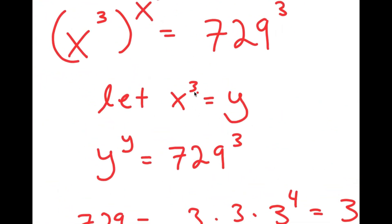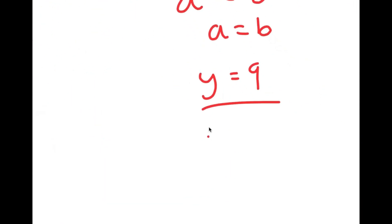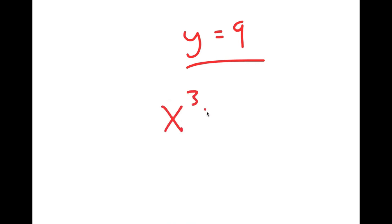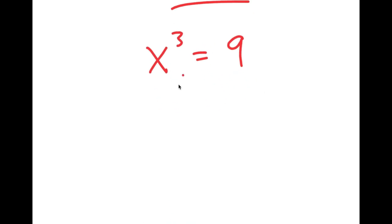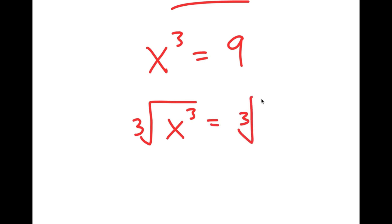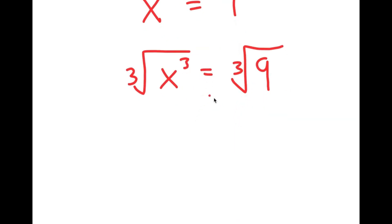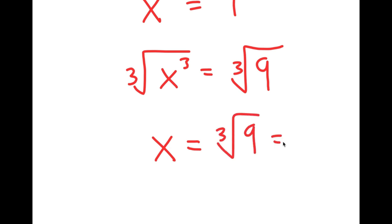Recall how I let x to the power of 3 equal to y, meaning x to the power of 3 is equal to 9. So now to solve this, I'm going to take the cube root on both sides. The cube root of x to the power of 3 is simply x, so I get x is equal to the cube root of 9, which is the same thing as 9 to the power of 1 third.